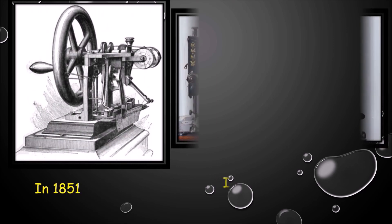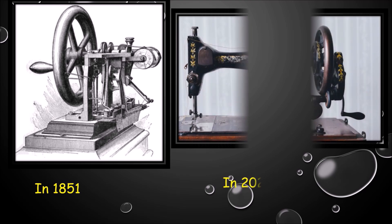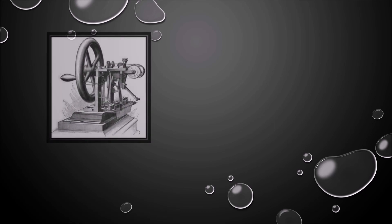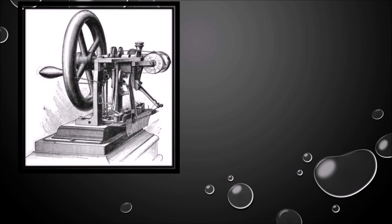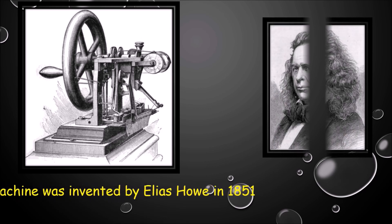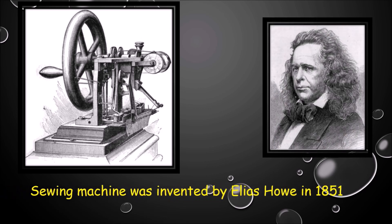This is the first sewing machine, which was invented in 1851. Nowadays in 2020, the sewing machine looks like this. The sewing machine is basically used to stitch clothes. The first sewing machine was invented by Elias Howe in 1851.